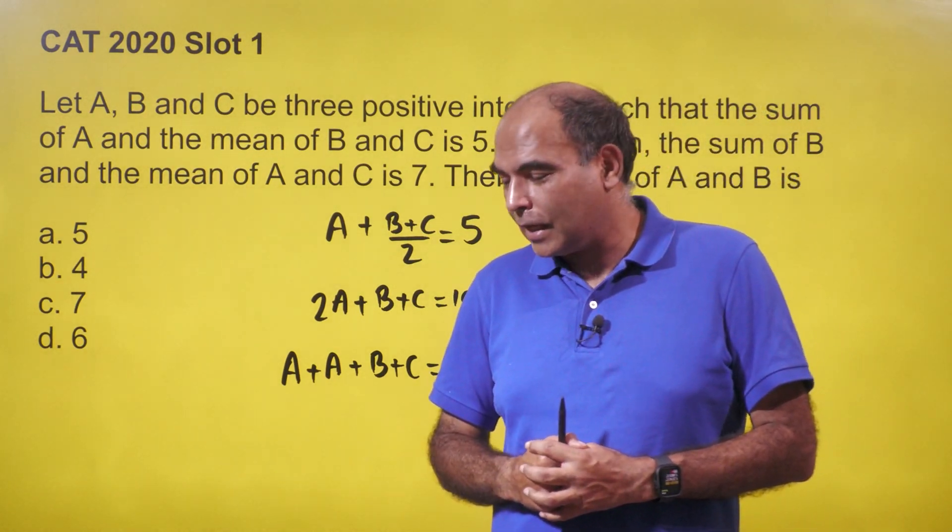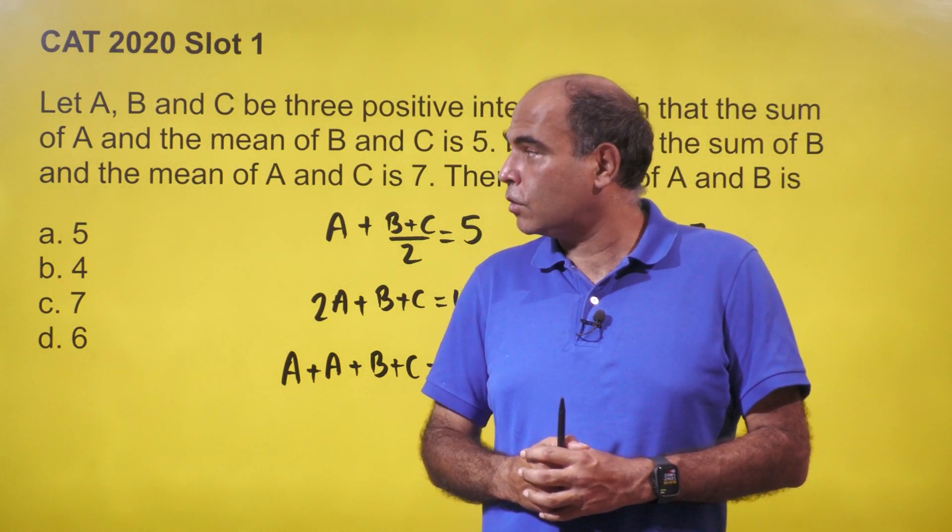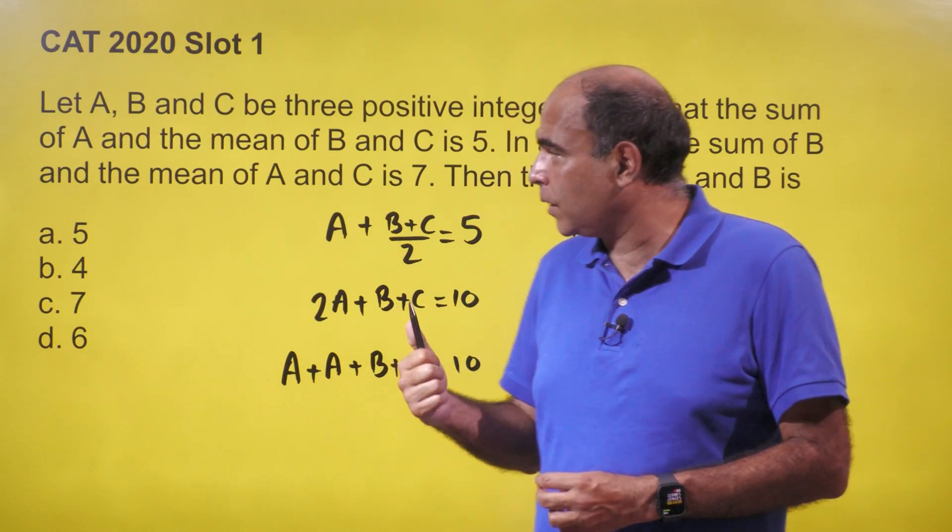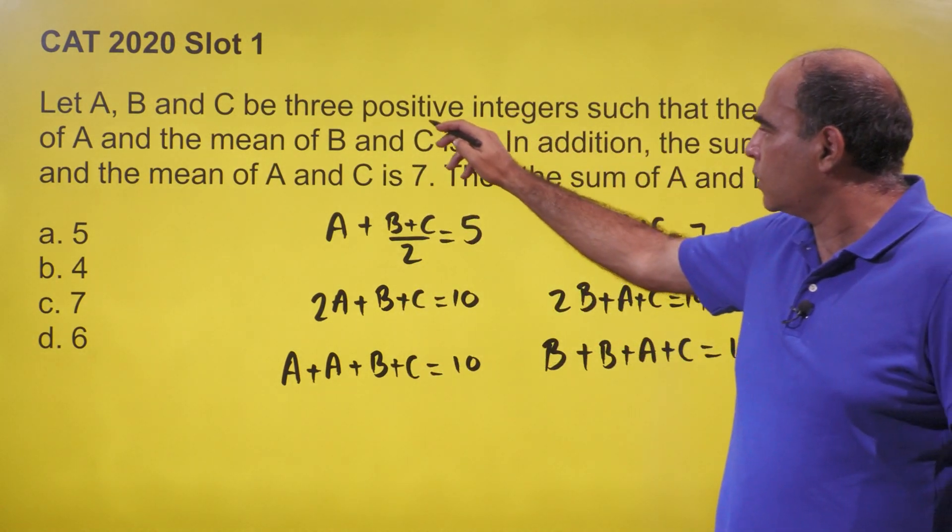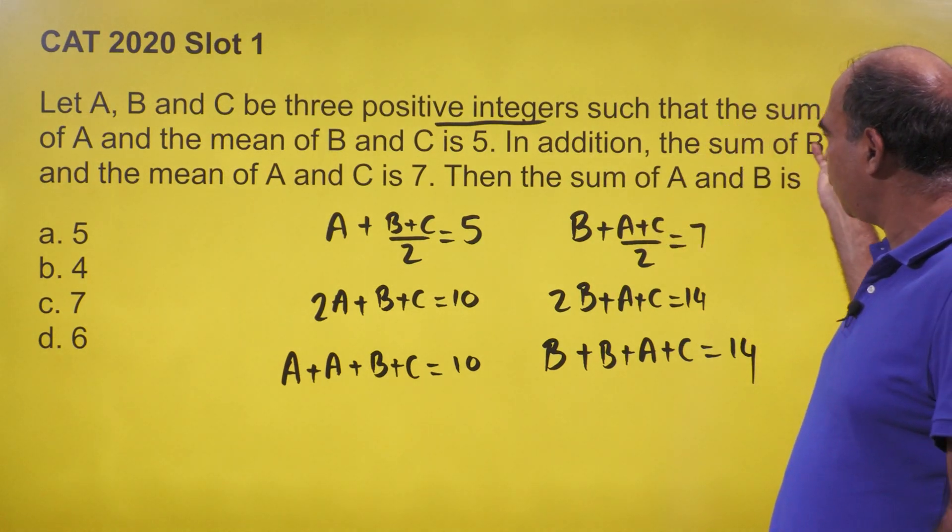Hey guys, welcome back to the 60 Second Series of CAT questions. CAT 2020 Slot 1, an interesting question. Let A, B, C be three positive integers.